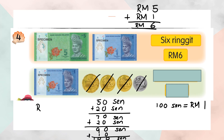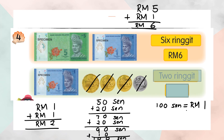Now, one ringgit plus another one ringgit, plus another one ringgit — you will get one plus one is two, so you will get two ringgit.